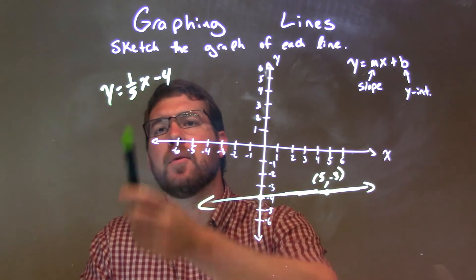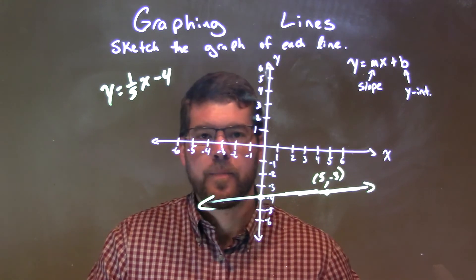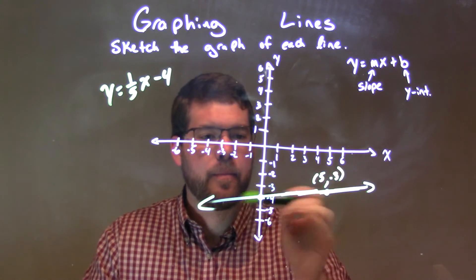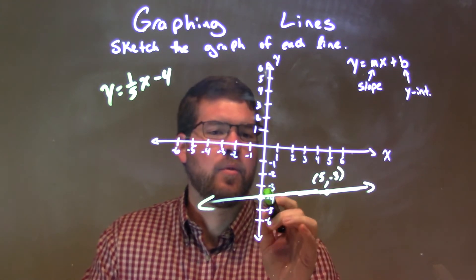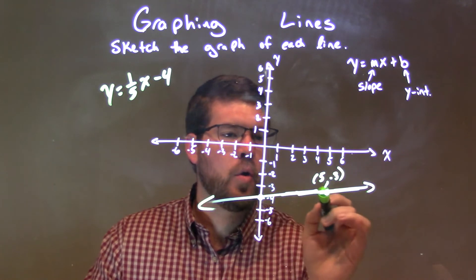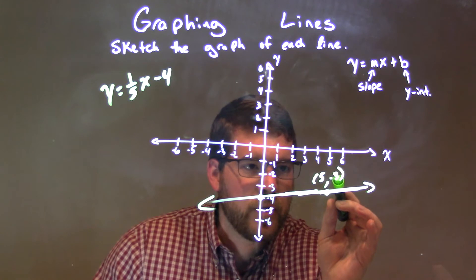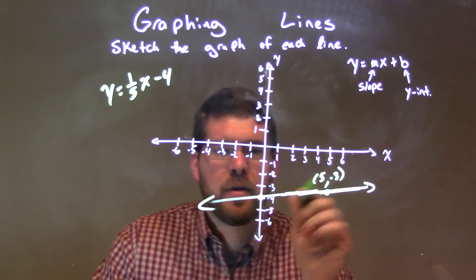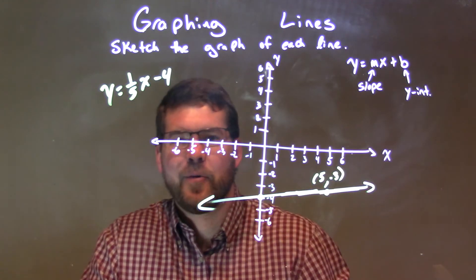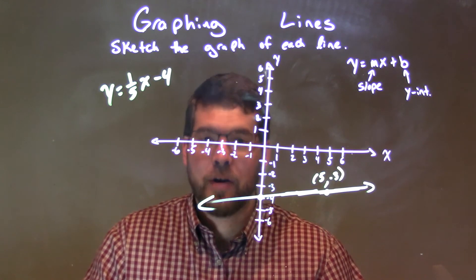So, quick recap. We have y equals 1 fifth x minus 4. Minus 4 is our y-intercept. Put a point right there. Then, our slope is 1 fifth. Went up 1 unit over 5. x-value is 5. Our y-value is negative 3. Put a dot. Connect the two dots. Made my graph. And then, we have our answer.